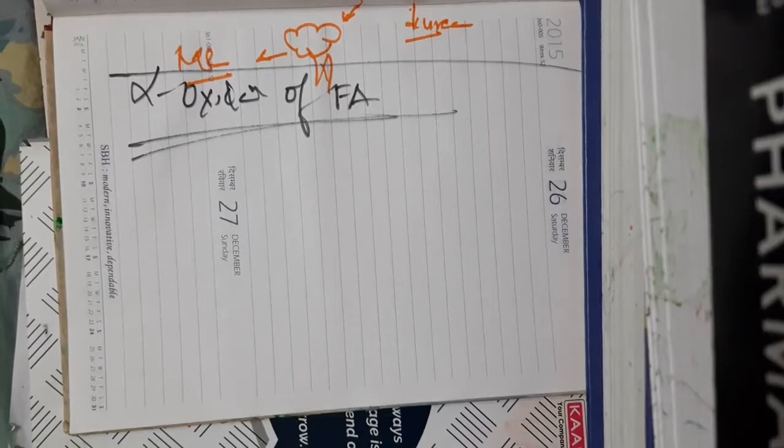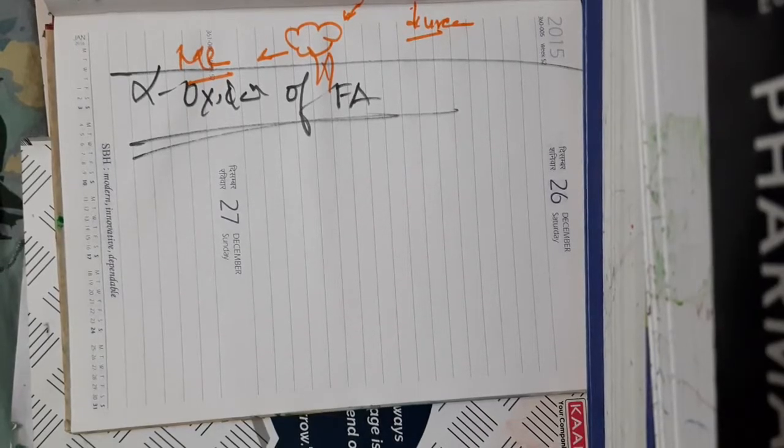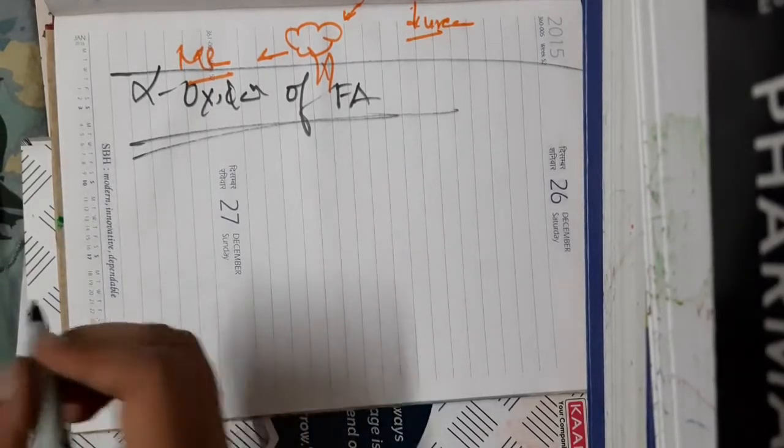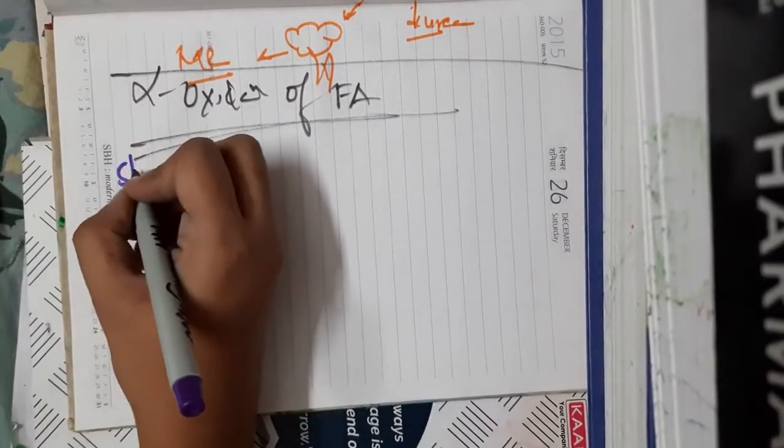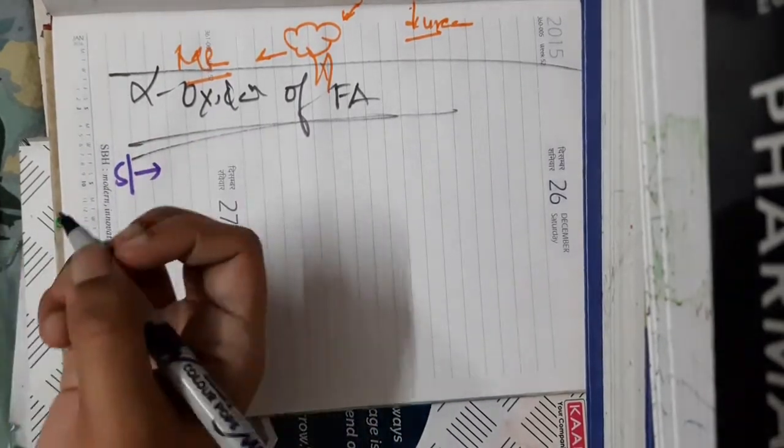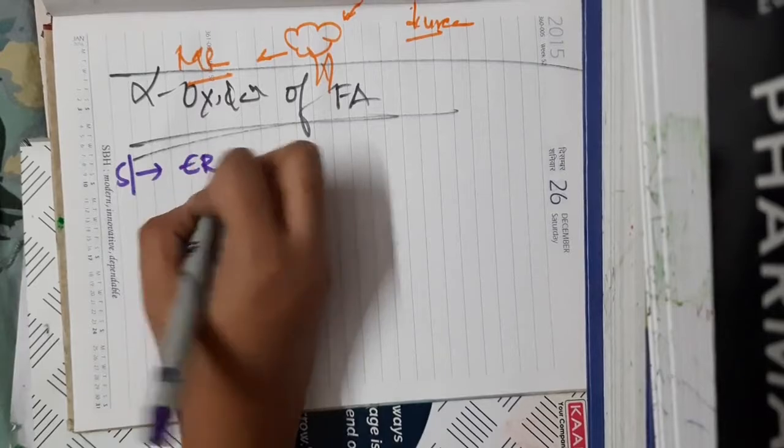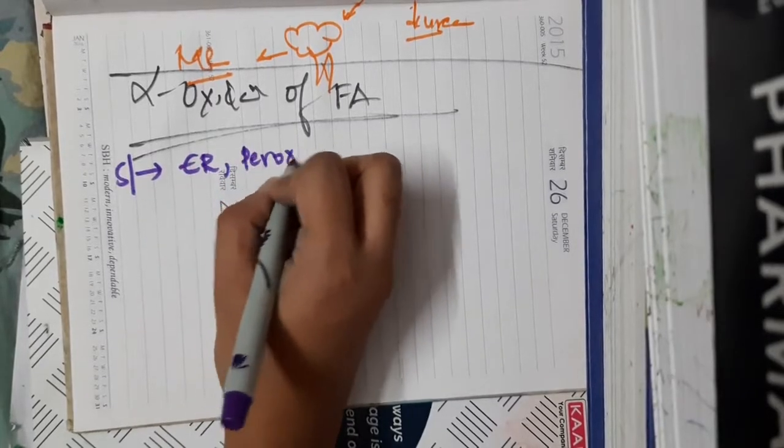Hello friends, let us now learn some important points about alpha oxidation of fatty acid. Alpha oxidation of fatty acid most commonly occurs in endoplasmic reticulum and peroxisomes.